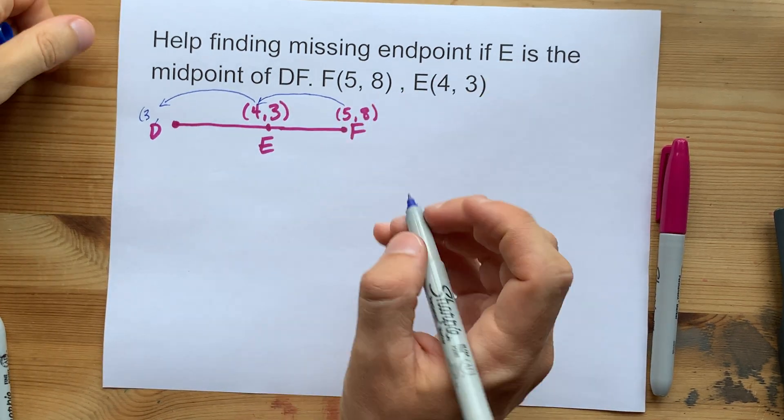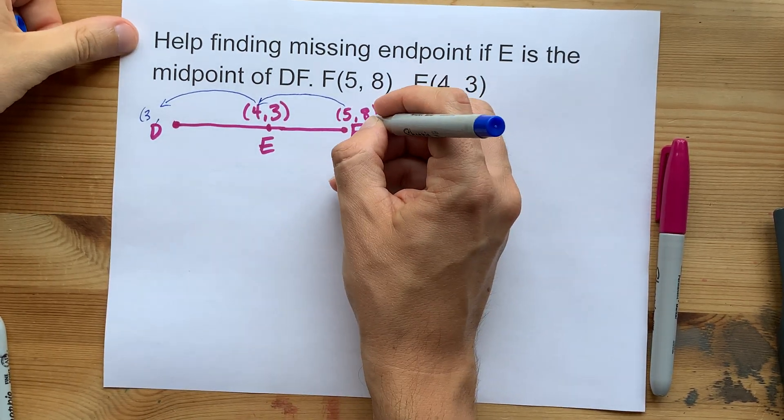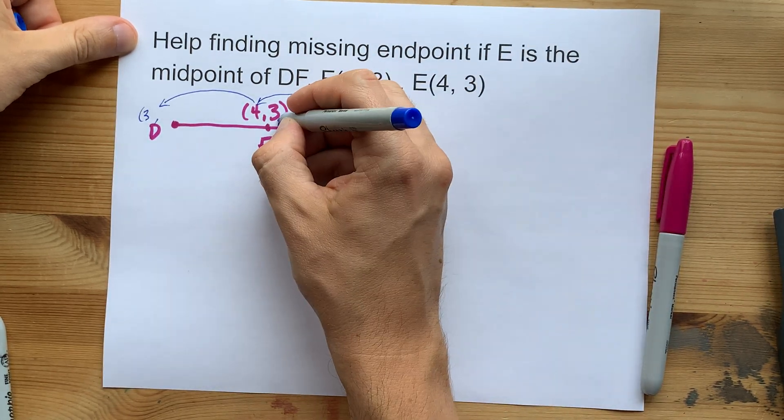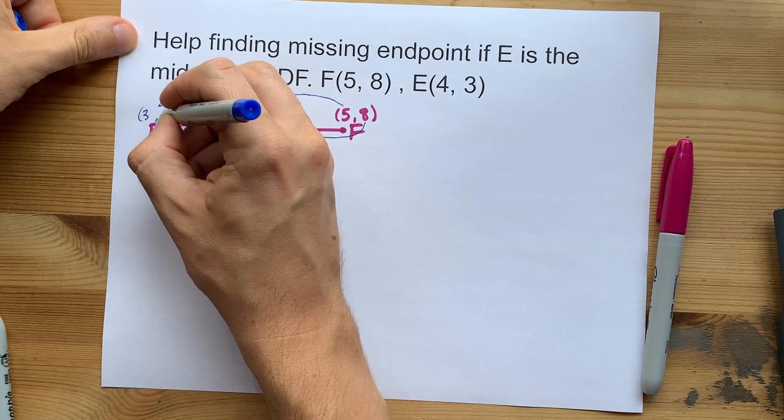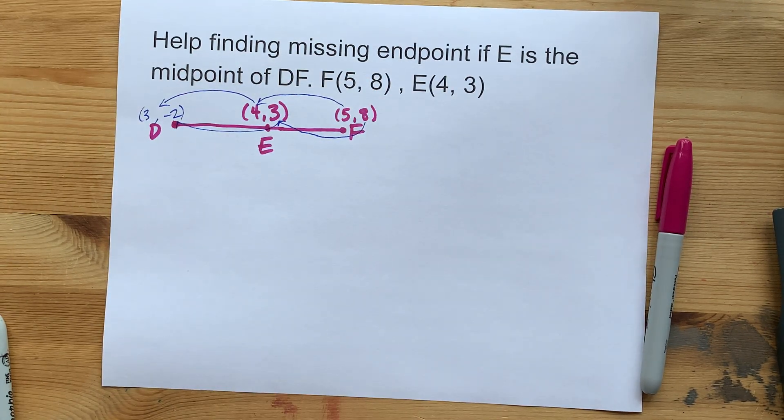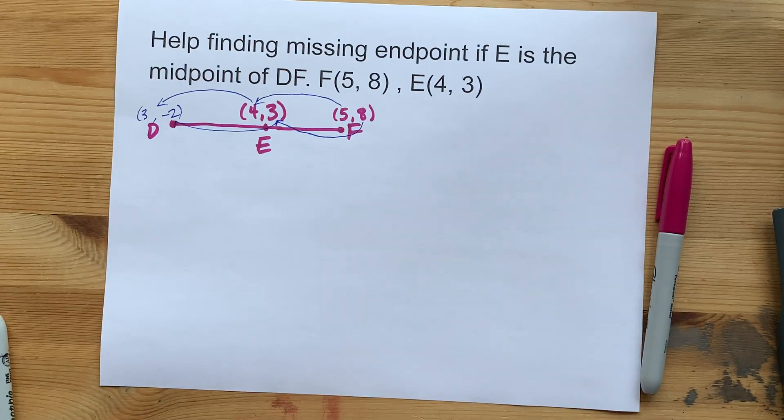And you'll do the same for the Y coordinates as well. Eight goes down to three. That's down five. So take away another five. That becomes negative two. The coordinates of D here are three comma negative two.